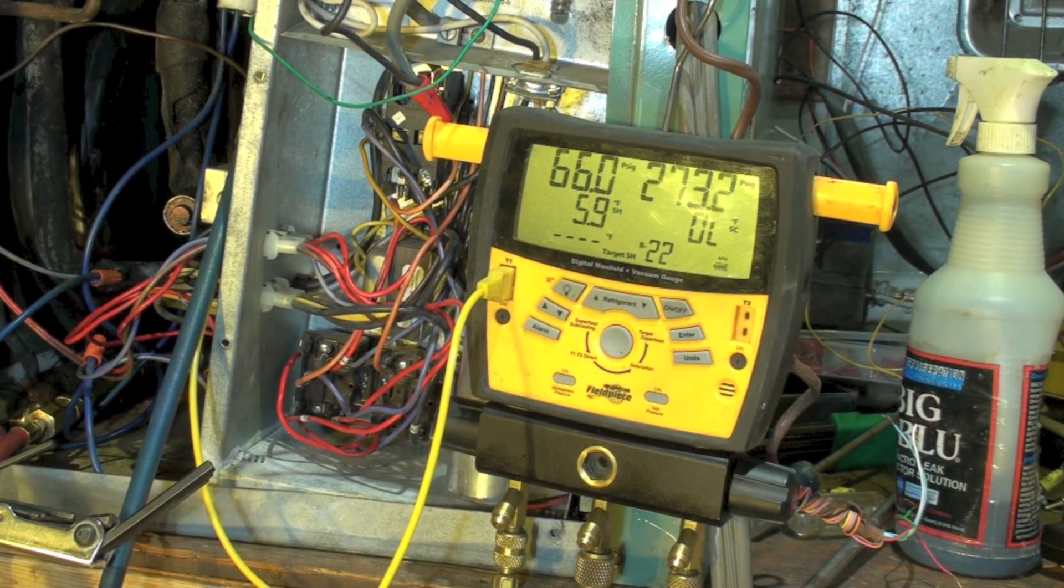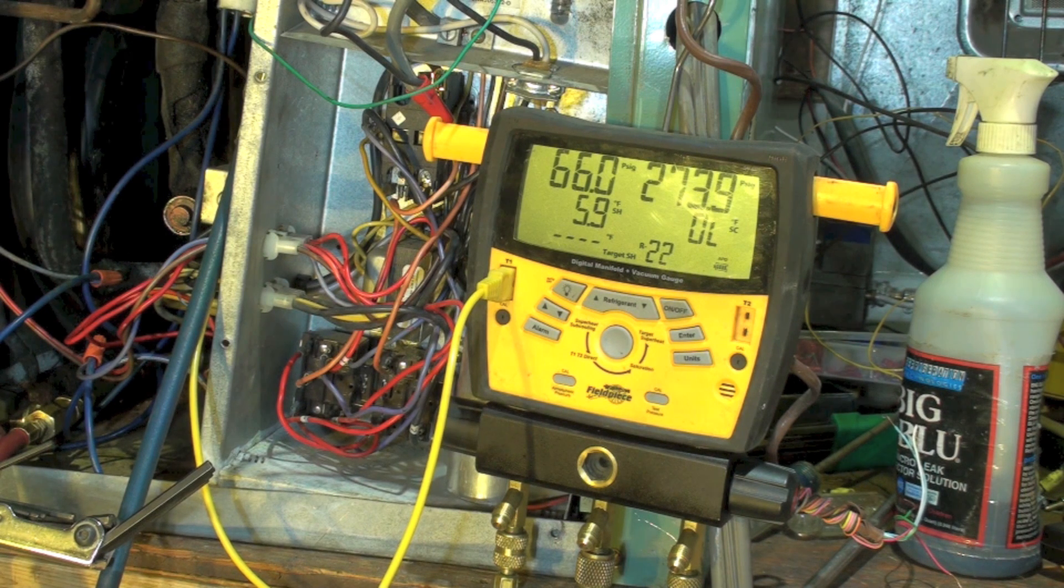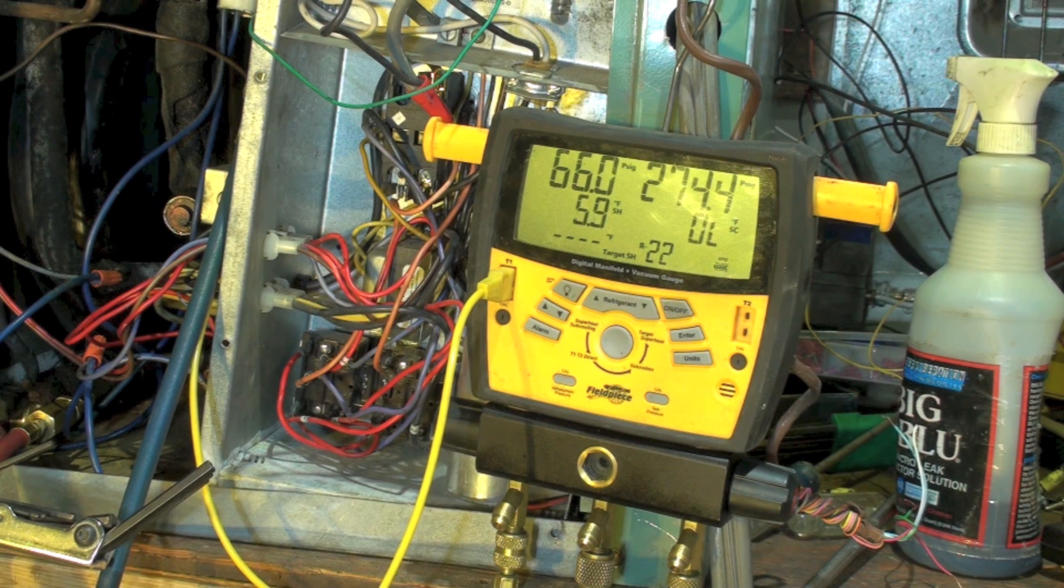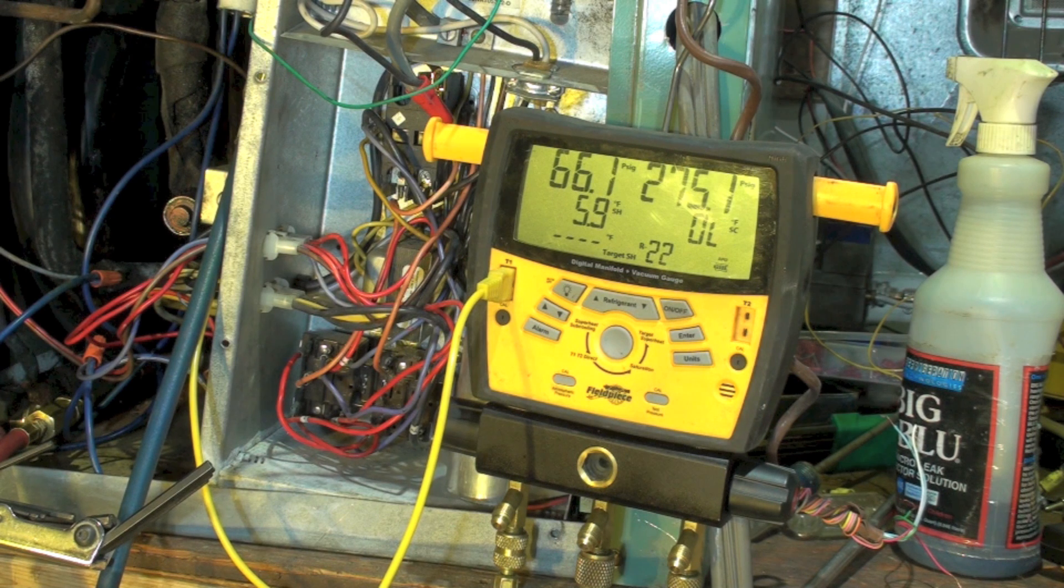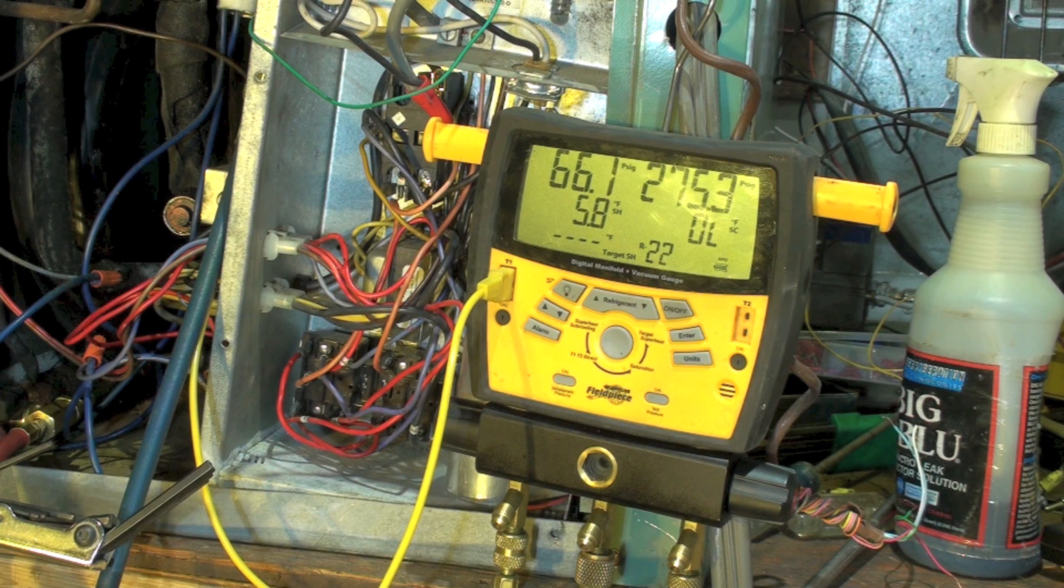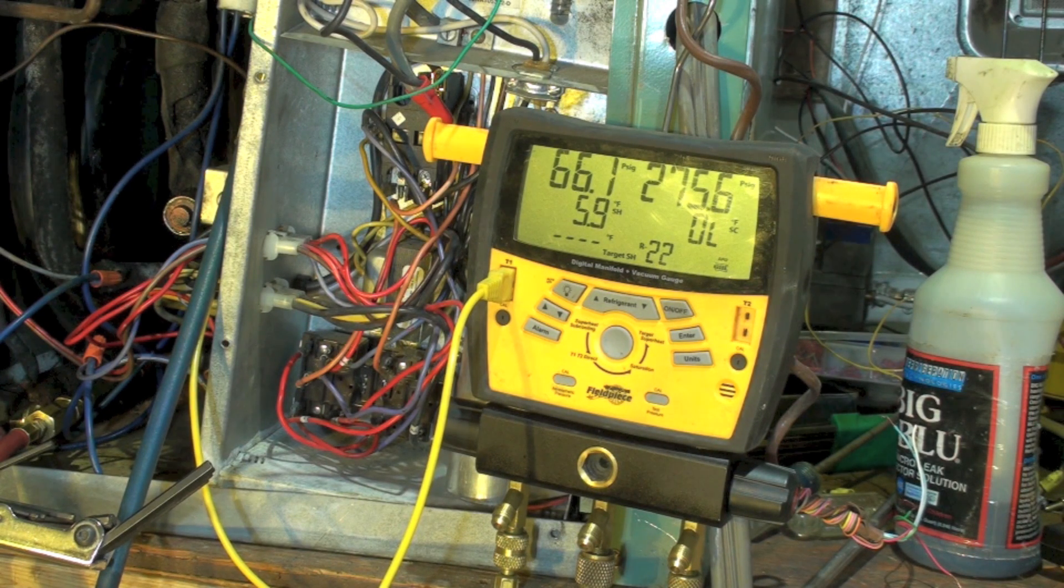Okay, what we're looking at here is a water-cooled or water source heat pump. It's in cooling mode, so it's acting like a water-cooled condenser. We're using water to condense the refrigerant. Right now our head pressure is 275, suction pressure 66, return air temperature is about 78, and we got about 17 degrees across the coil.